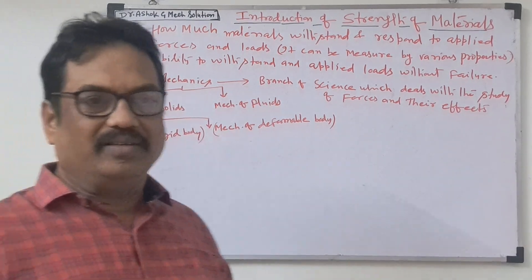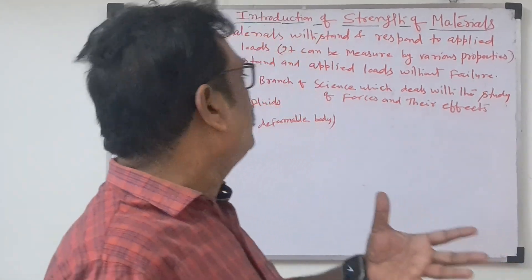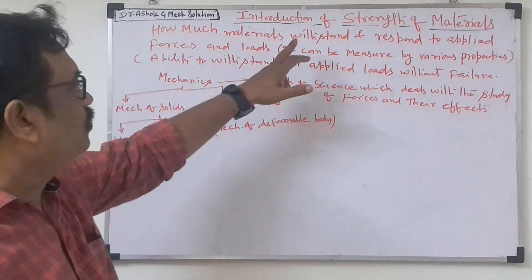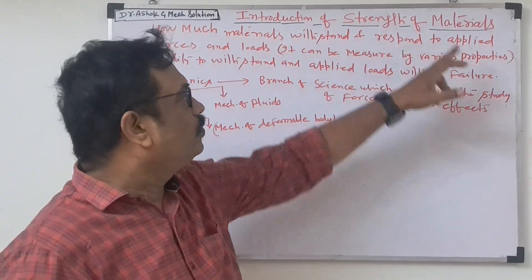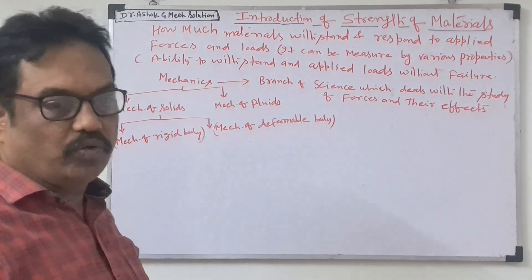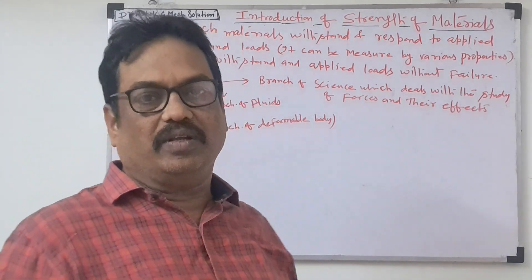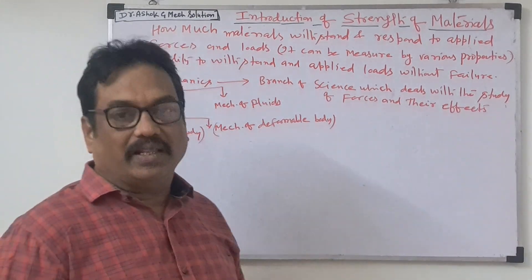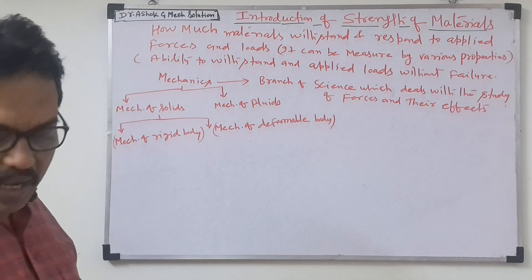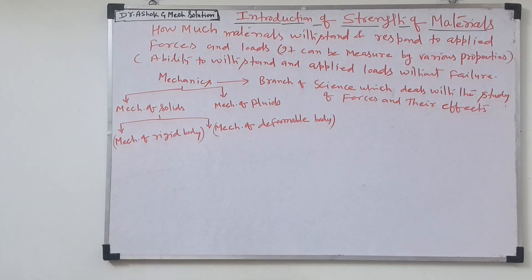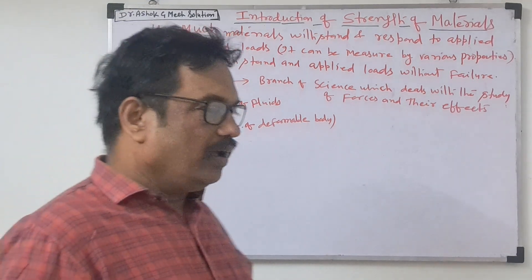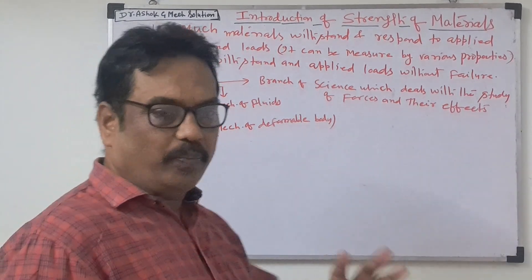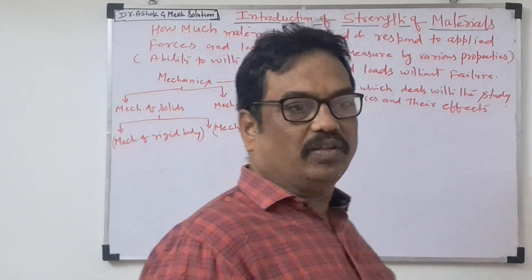What is the meaning of strength? Strength means the power of materials — how much they can withstand and respond to the applied force. So how much force they can withstand and survive. To check the strength of any material, they have some properties: plasticity, ductility, creep, toughness, stiffness. These are the properties of the materials, and based on these we can check the strength.